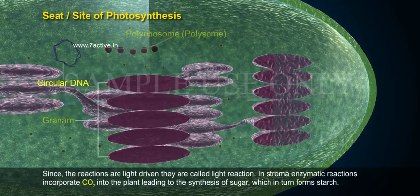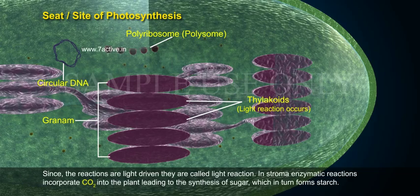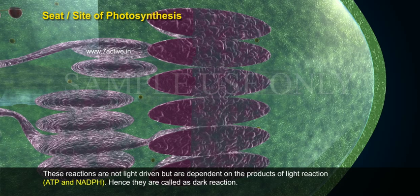Since these reactions are light-driven, they are called light reactions. In the stroma, enzymatic reactions incorporate CO2 into the plant, leading to the synthesis of sugar, which in turn forms starch. These reactions are not light-driven but are dependent on the products of light reactions — ATP and NADPH. Hence, they are called dark reactions.